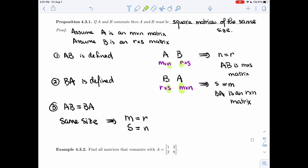Alright, so we end up with tons of conditions, but if you follow them around, it tells you that N equals R, R equals M, M equals S, and so we end up with A, B are both N by N matrices. So exactly the same size, and that size is squared.